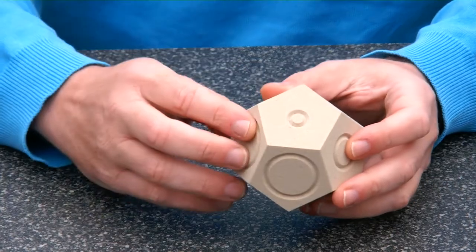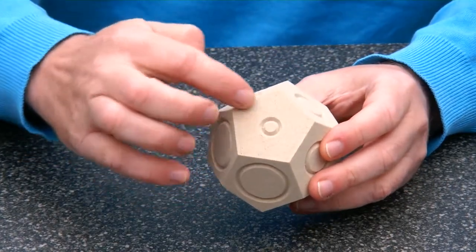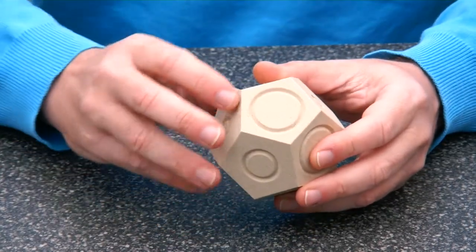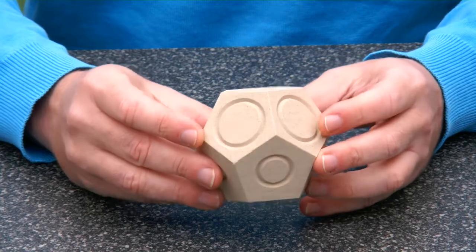There are 12 pentagons and some of the pentagons have a small circle, a medium circle, or a large circle. And let's explore symmetries.